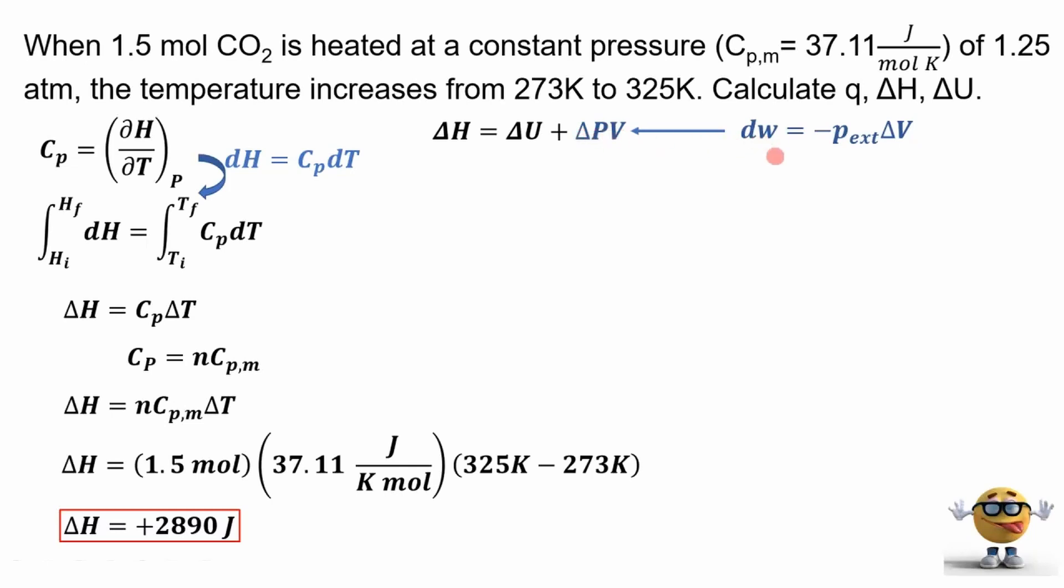We need to know what this pressure times the volume is. And we're going to get that from the work. Differential dw is equal to negative of the external pressure times the change in volume. Now we don't know the change in volume, but we do know that the pressure is constant. We're going to say that the external pressure is the same as the system pressure because it's under constant pressure.